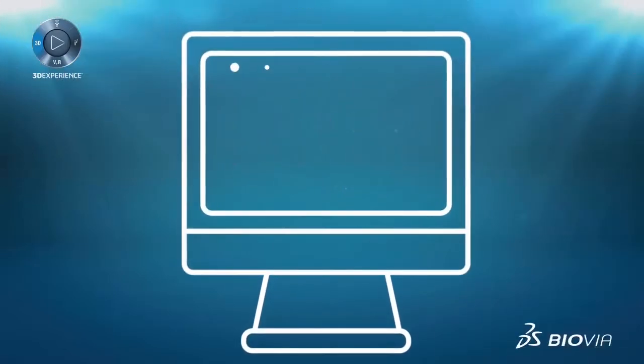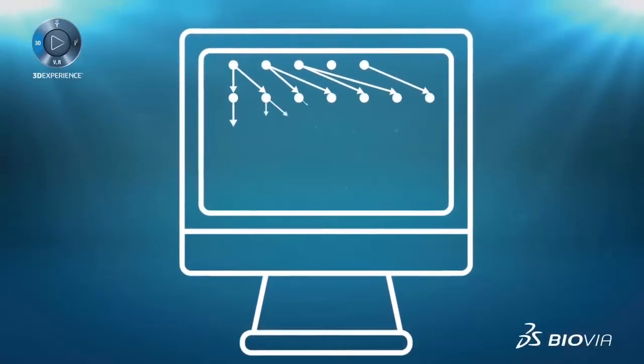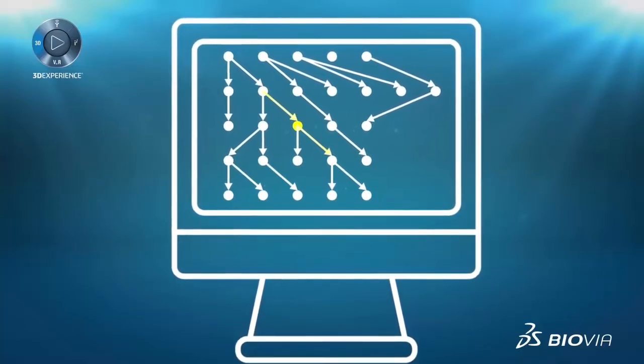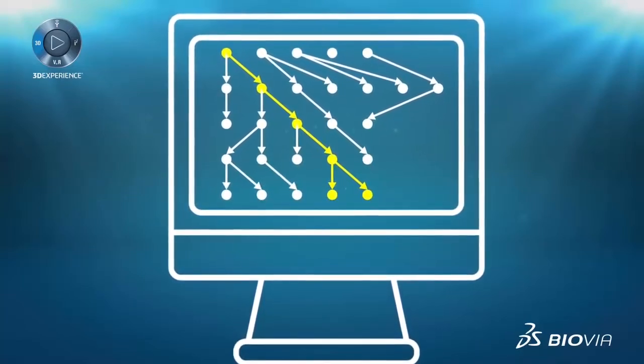A genealogy map provides a visual representation of lot genealogy across the manufacturing process stream so it's instantly clear what went into which product.